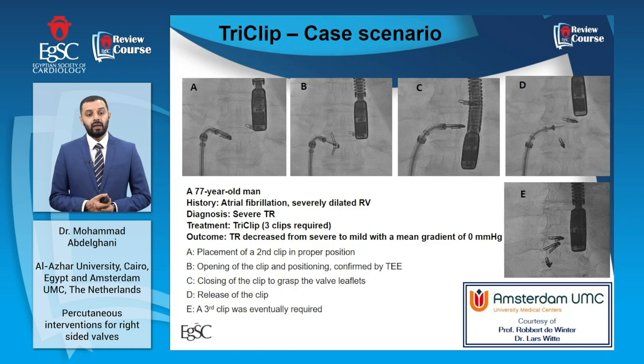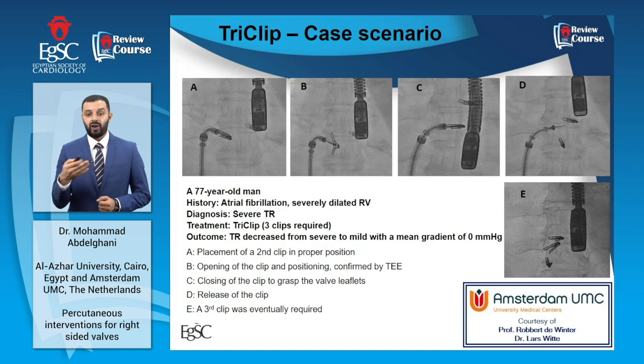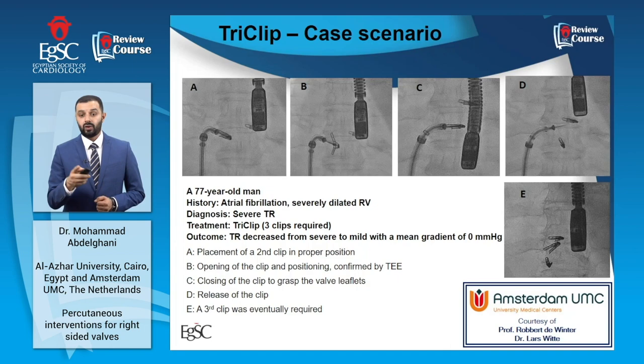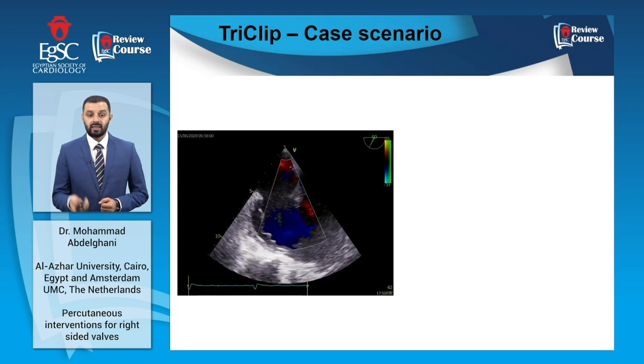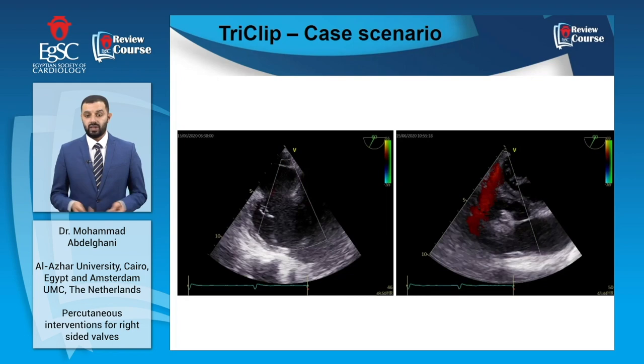This is a case of a 77-year-old male with atrial fibrillation, severely dilated RV, and severe or torrential TR. The heart team decided to offer him TriClip. Three clips were eventually required, and these images document the different steps of the procedure — from positioning, to opening, to grasping, to final release of the clip. Three clips were implanted in this patient, which led to reduction of this free TR with extreme leaflet malcoaptation into a much less severe TR with zero residual gradient.